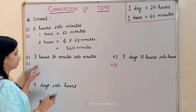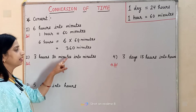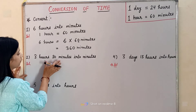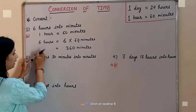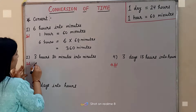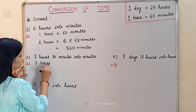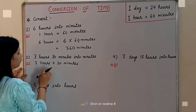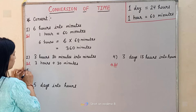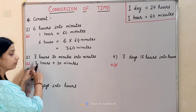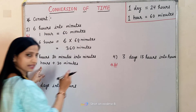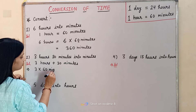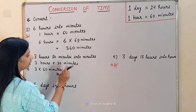Now similarly, the second question is: convert 3 hours 30 minutes into minutes. We have to convert the hours into minutes. First, we will break this into 3 hours and 30 minutes. We will write it as 3 hours plus 30 minutes. We will convert only the 3 hours into minutes by multiplying by 60. So 3 multiplied by 60, and we will change the unit to minutes, then add the remaining 30 minutes.